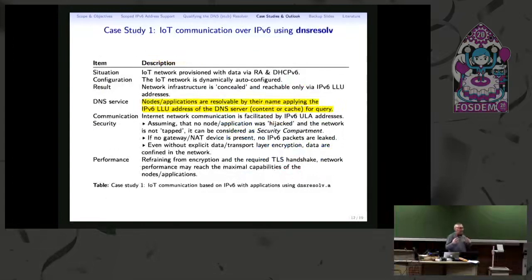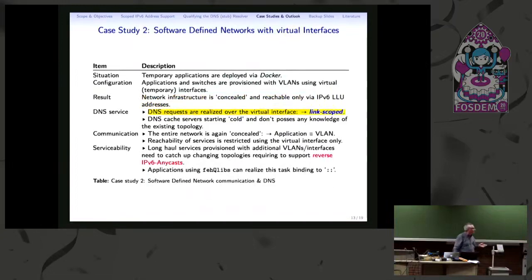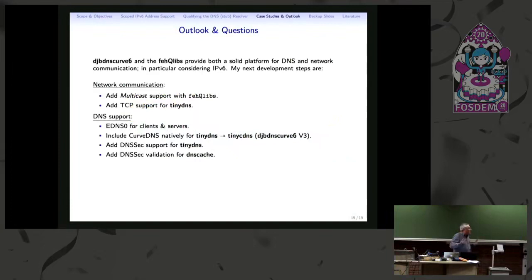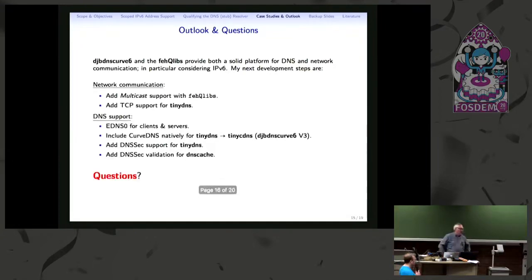Given these ideas, you can set up IoT communication — the software is tiny enough to build DNS resolve routines for IoT devices. You can also use it for software-defined networking with virtual interfaces, and for information-centric networking defining particular DNS services per application. For future work, I plan to add multicast support, TCP support for TinyDNS server, and other projects. Thank you very much.